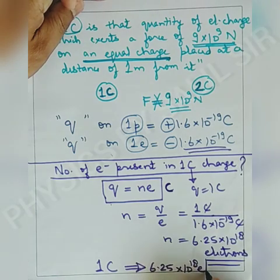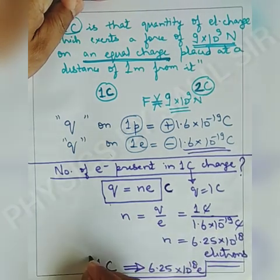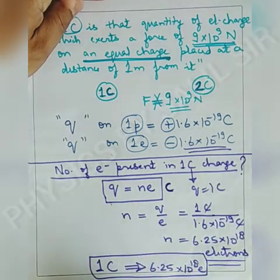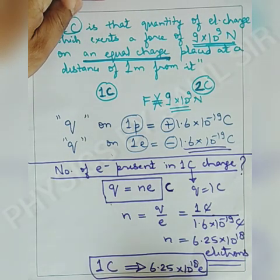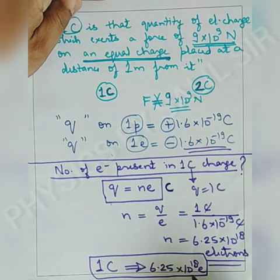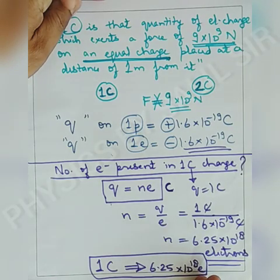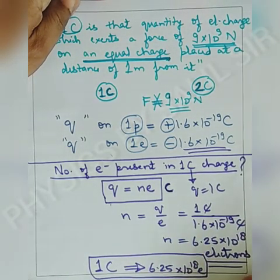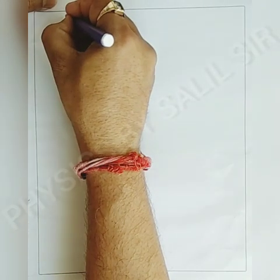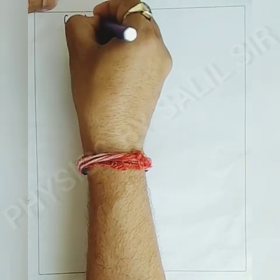If we talk about two coulombs of charge, since it is an integral multiple, we multiply 6.25 × 2 × 10¹⁸ electrons — meaning the number of electrons will be doubled.